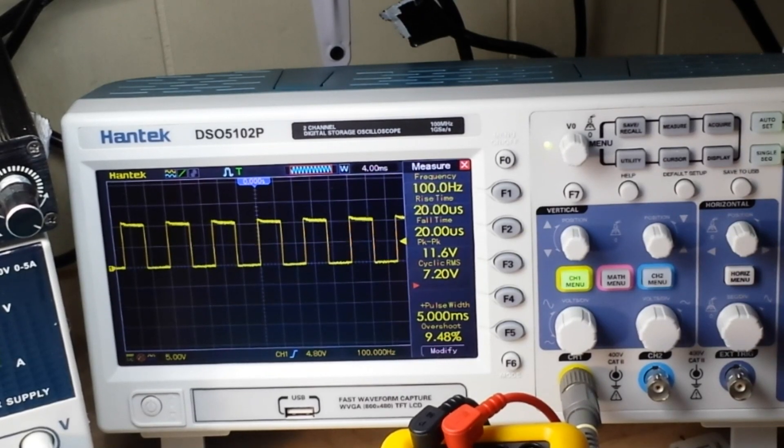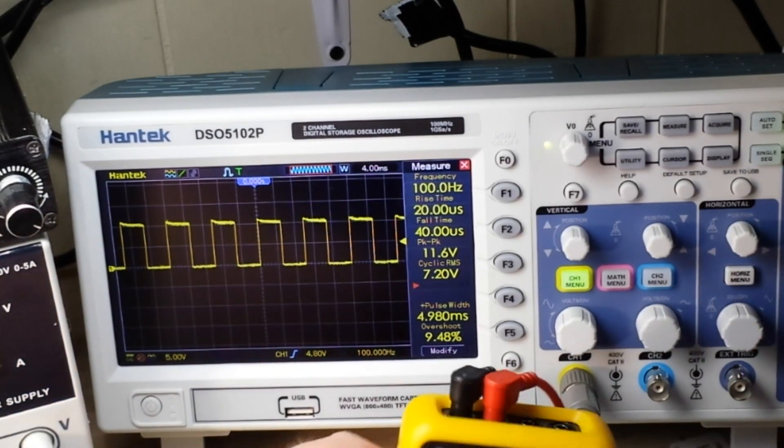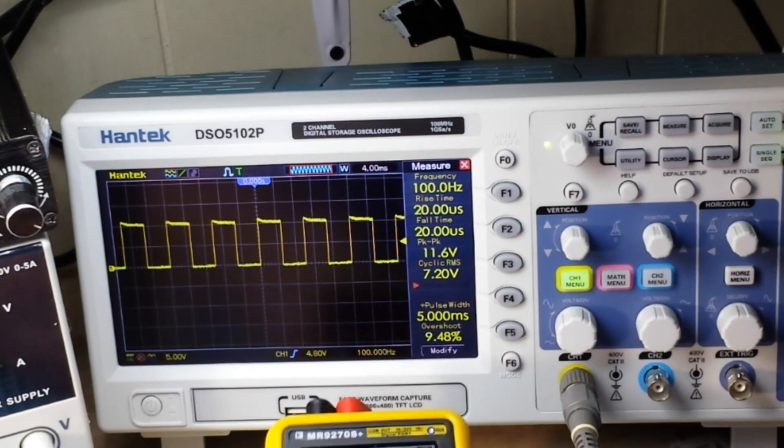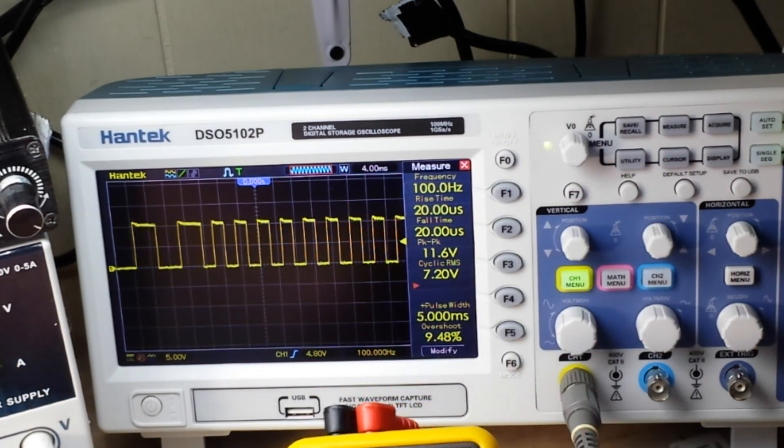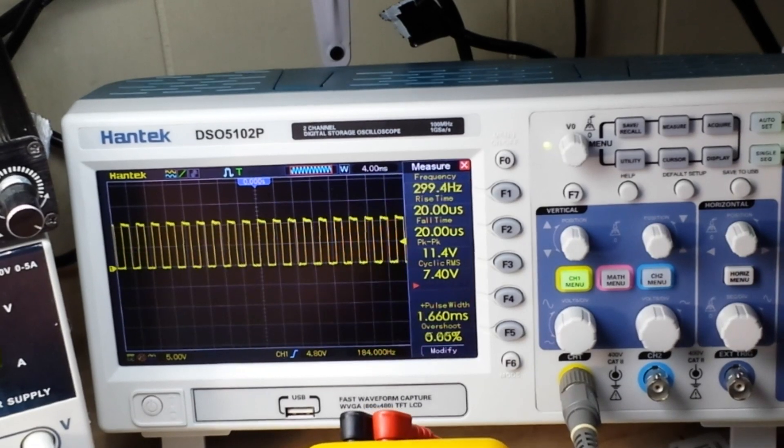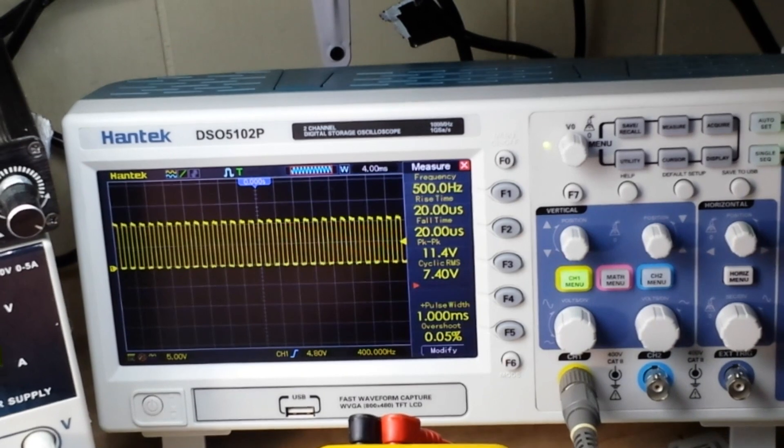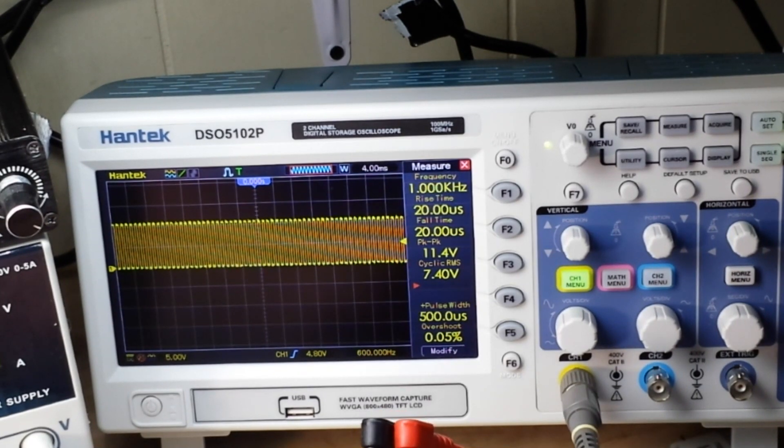All right, well there she is on the scope. You can see I've got it set for 100 hertz and it's showing 100 hertz. There's 200, 300, 400, 500. There's a kilohertz.